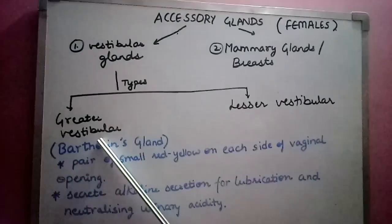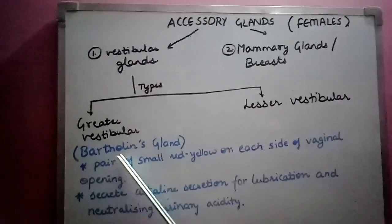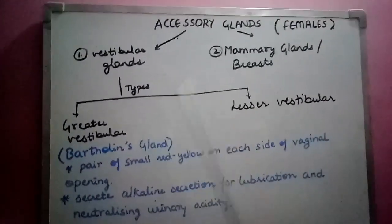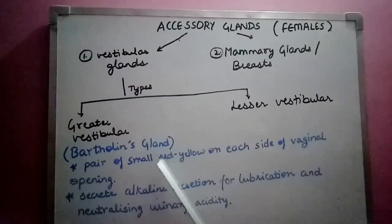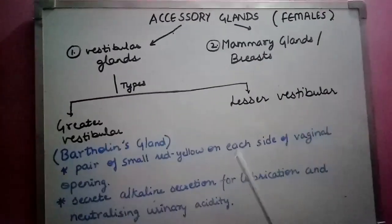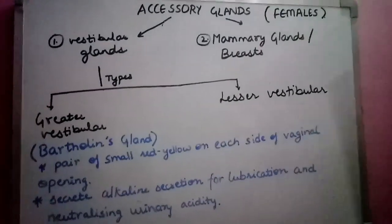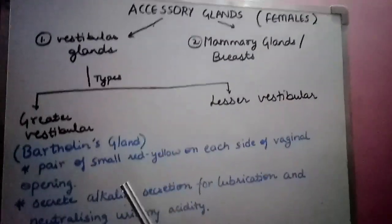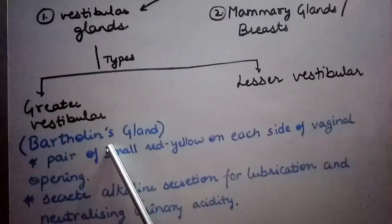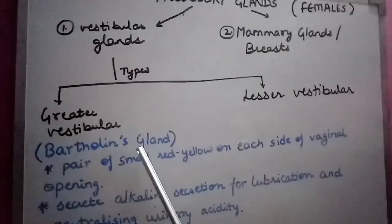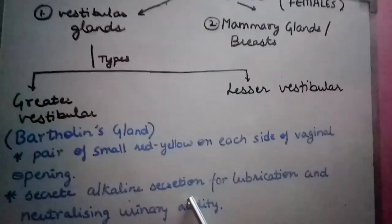First we are going to talk about the greater vestibular gland, which is also known as the Bartholin gland. This gland is present in pairs. It is a very small gland, reddish-yellow in color, and is present on the left and right side of the vaginal opening.